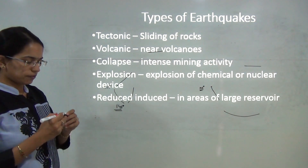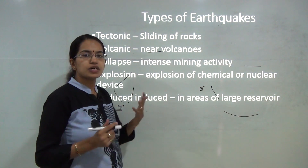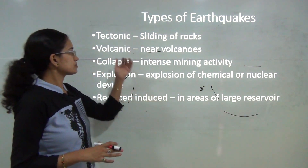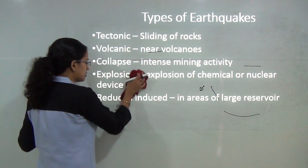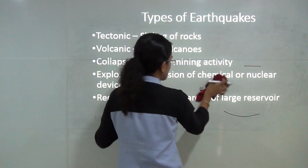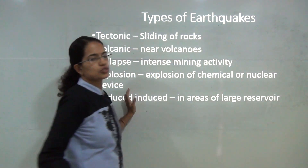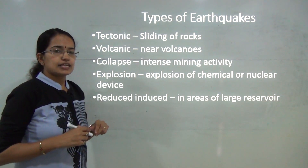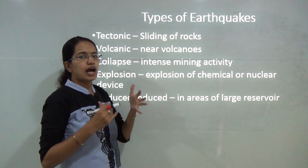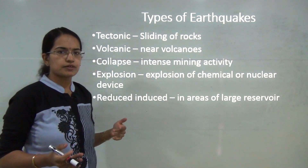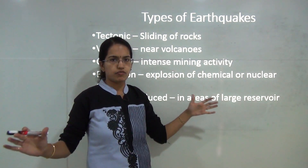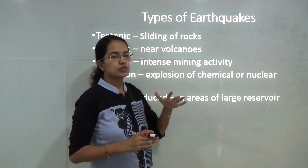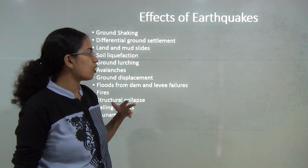Earthquakes can be of various types. Tectonic earthquakes are caused by sliding of rocks and fault creation due to seismic activity. Volcanic earthquakes occur near volcanic regions, such as along the Pacific Ring of Fire. Collapse earthquakes result from sudden collapse of mining areas. Reservoir-induced earthquakes can occur when large dams or reservoirs are built. Finally, explosion-induced earthquakes result from chemical or nuclear explosions.